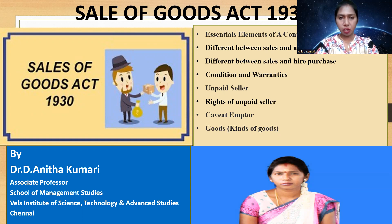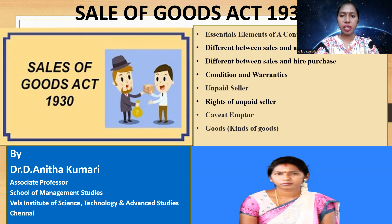It is a very interesting topic. In this topic, we are going to discuss the following headings: essential elements of a contract of sale, difference between sales and agreement to sales, difference between sales and hire purchase, condition and warranties, difference between condition and warranty, unpaid seller, rights of unpaid seller, caveat emptor, goods and what are the different types of goods available. We are also going to discuss some case studies.